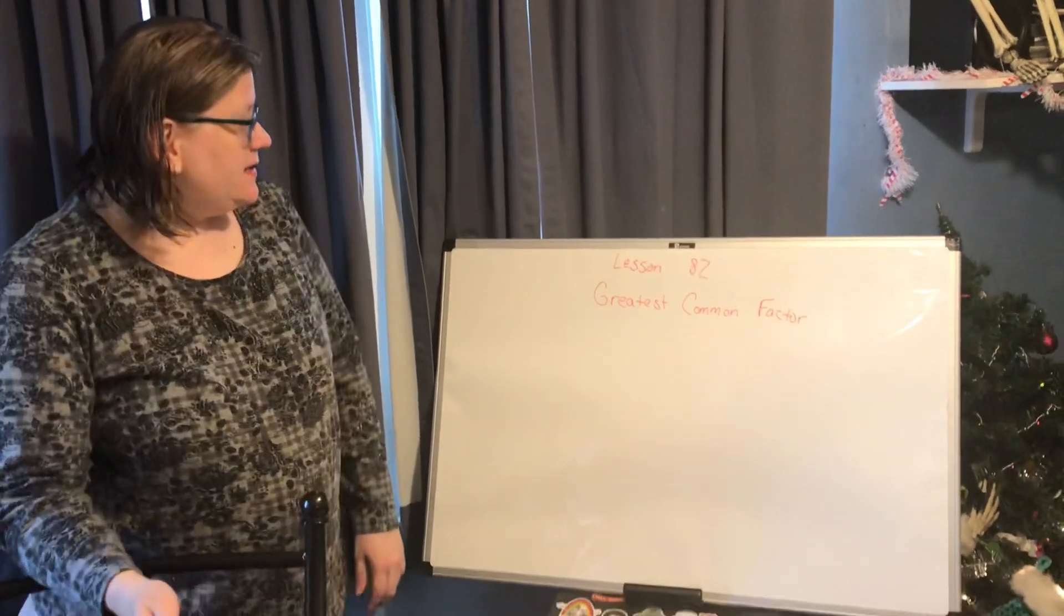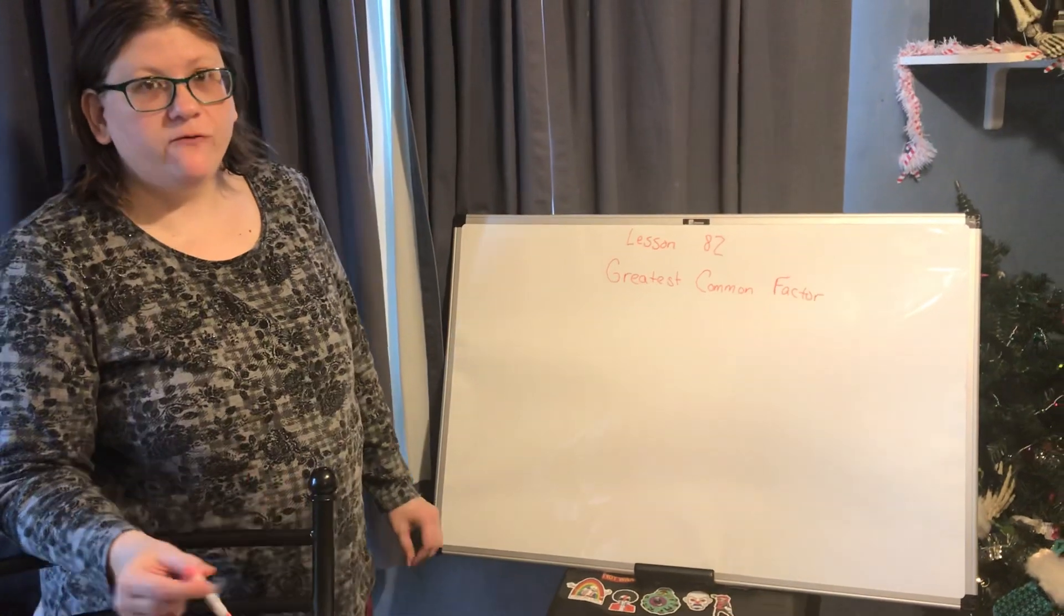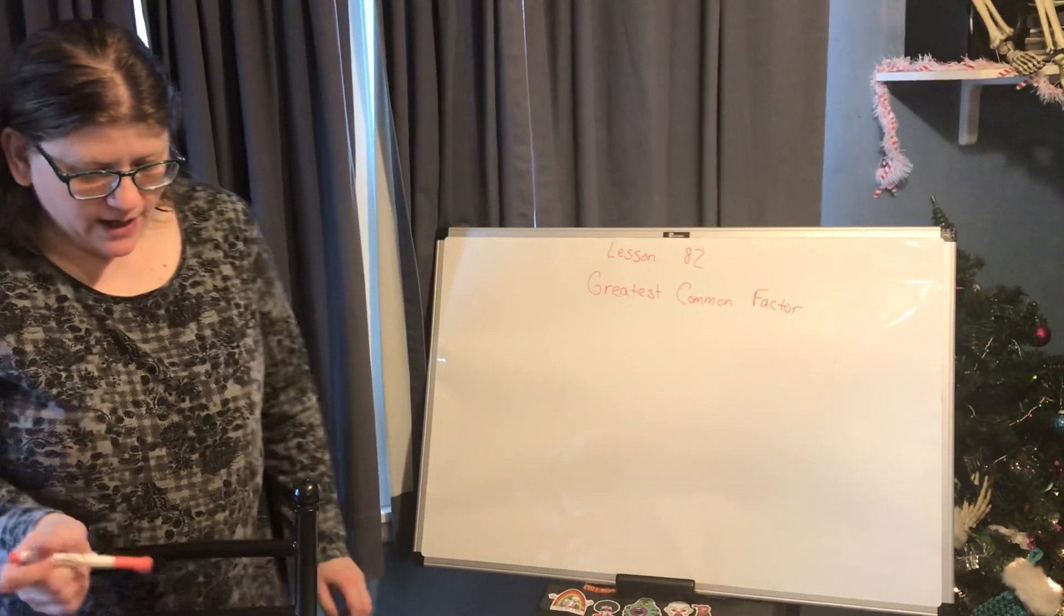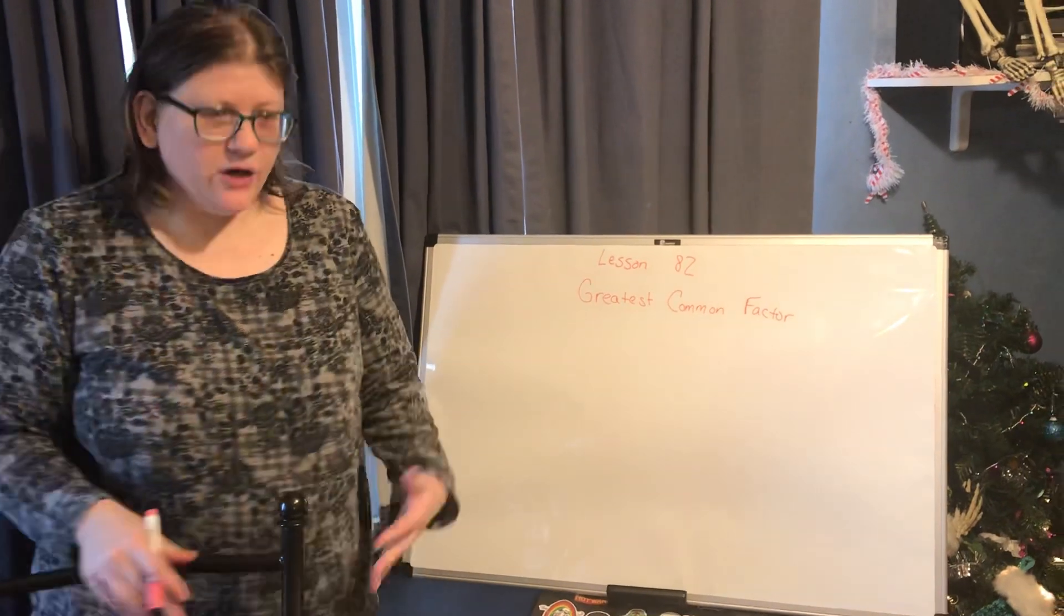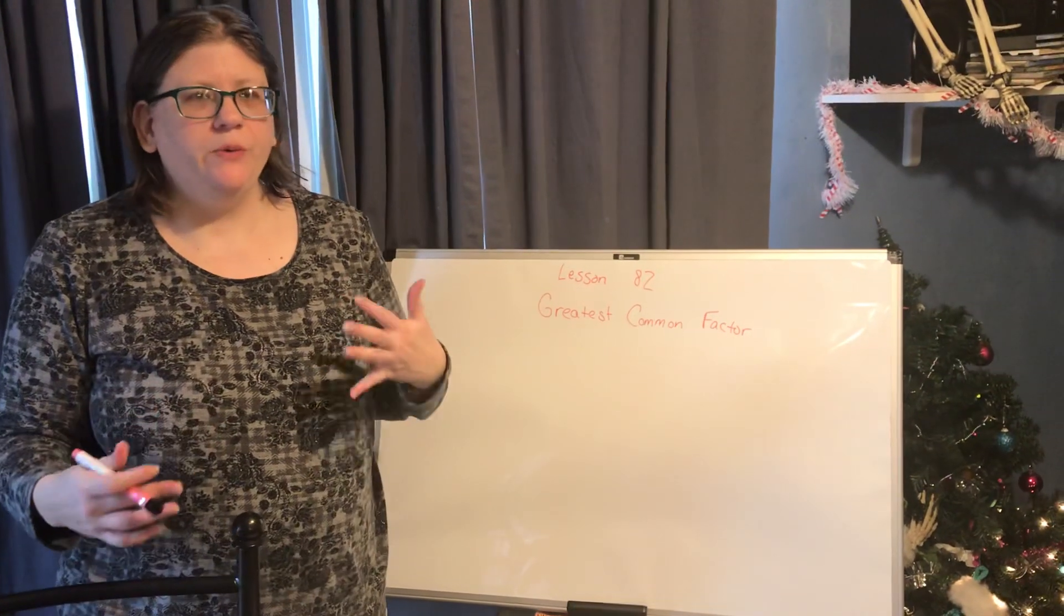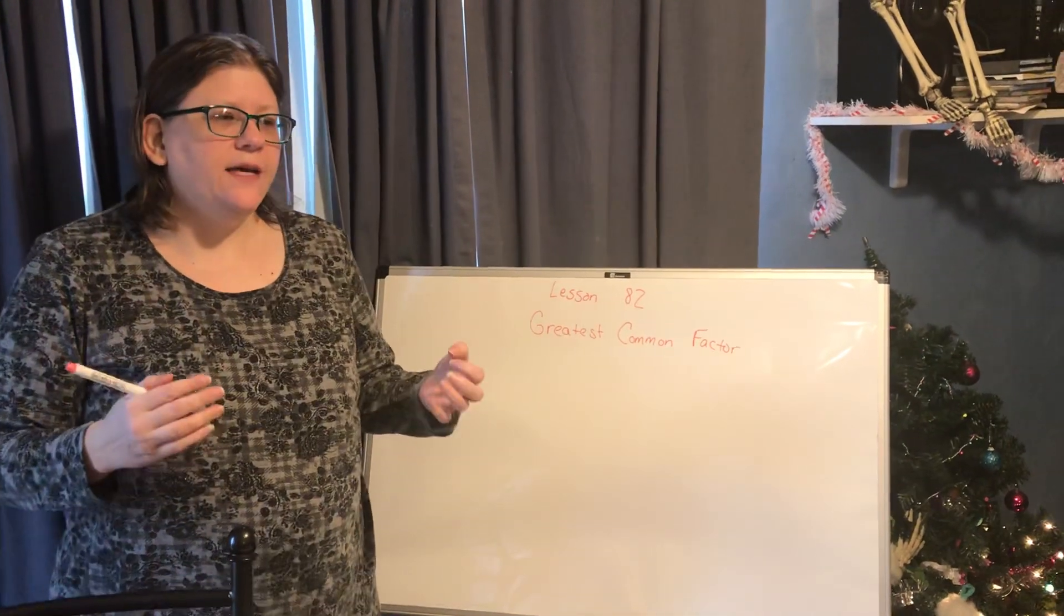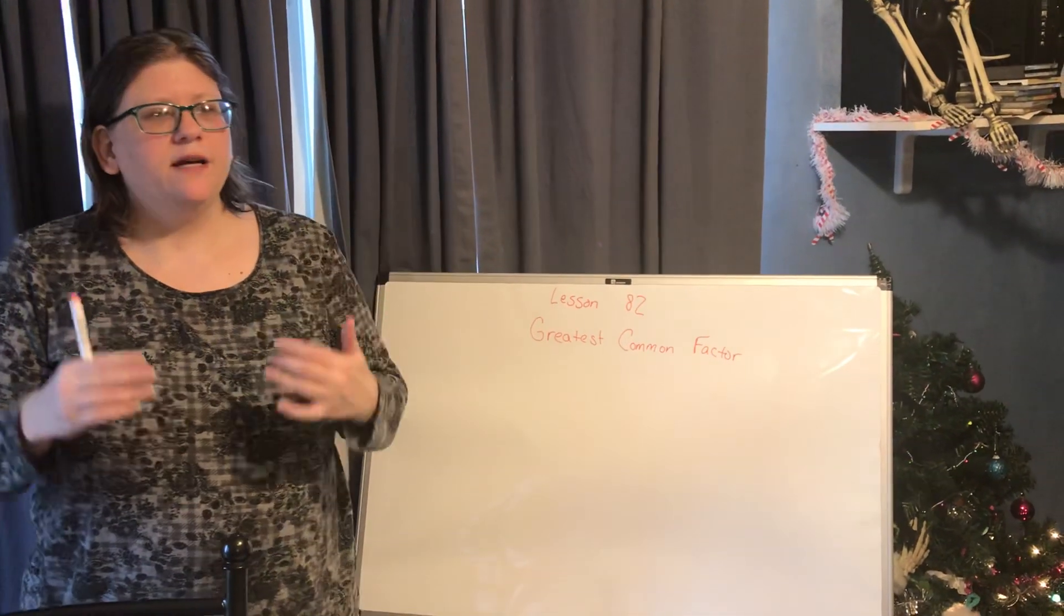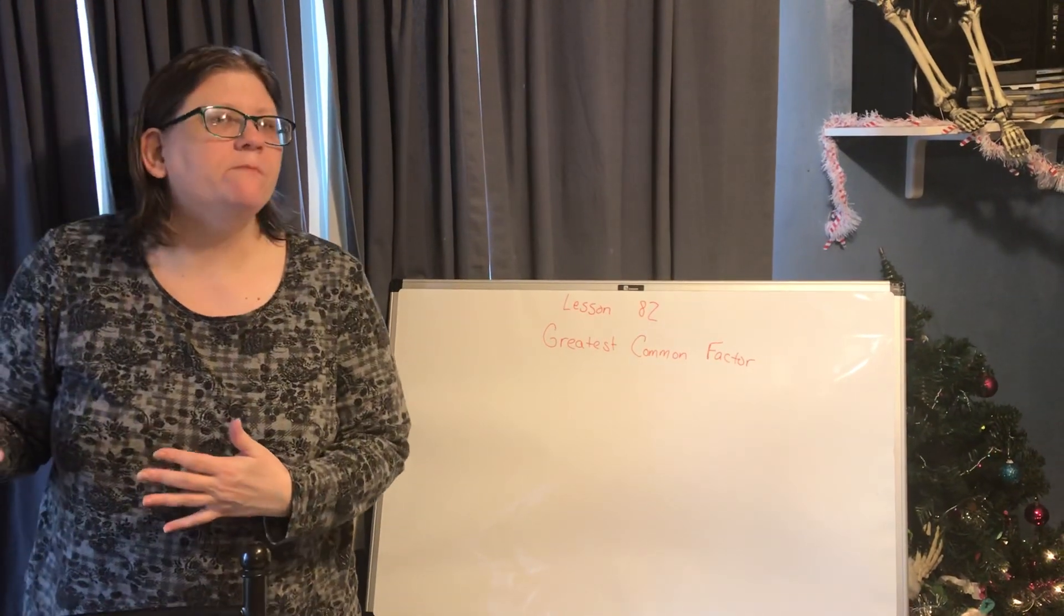Lesson 82: Greatest Common Factor. You'll find this on page 431 in your textbook. So what we're looking at today is writing the greatest common factor between two numbers. A reminder: a factor is a number when multiplied by another number that gives you the answer to a multiplication problem.